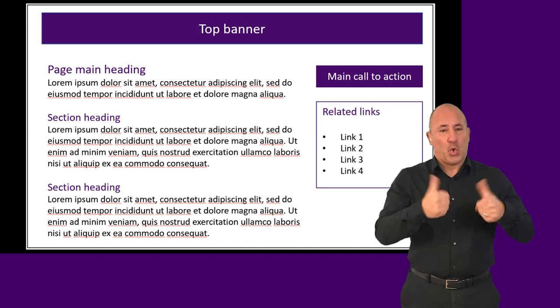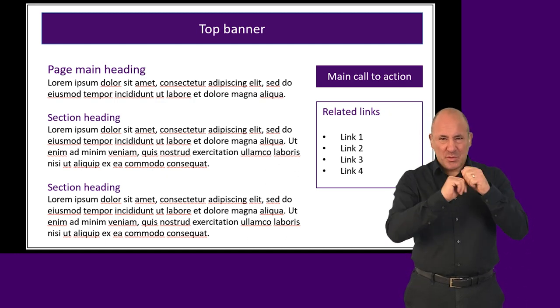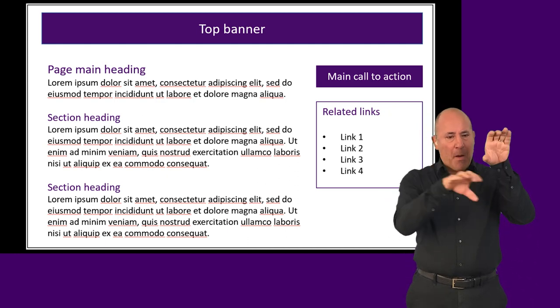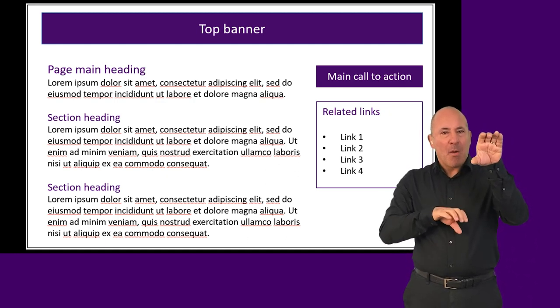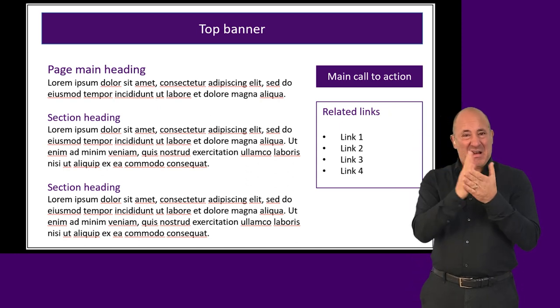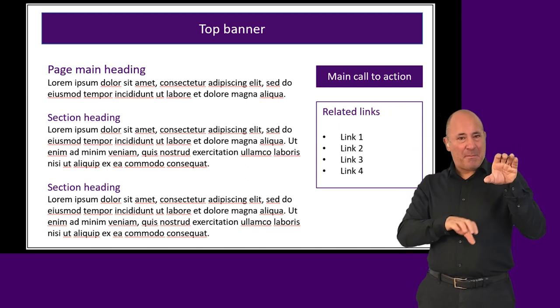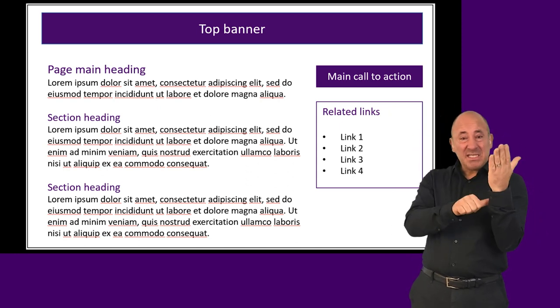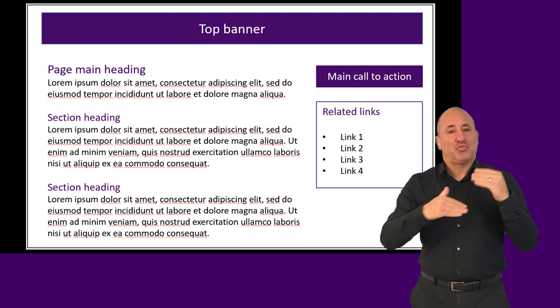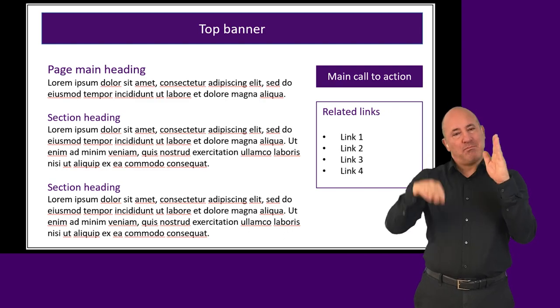Good content structure includes breaking down content into short sections, each preceded by a clear heading, using list format when appropriate, and placing important information at the beginning of the content.